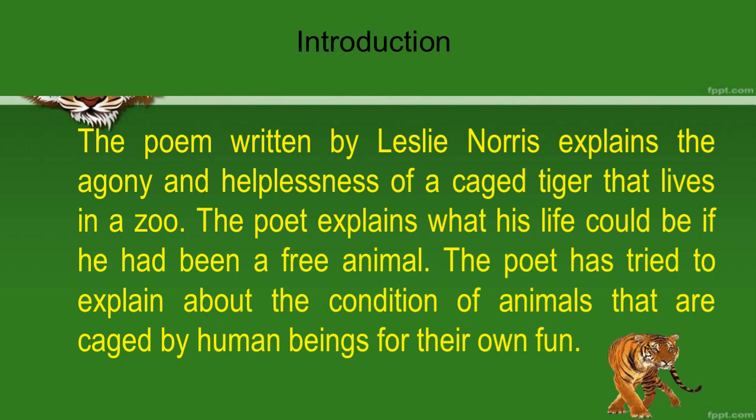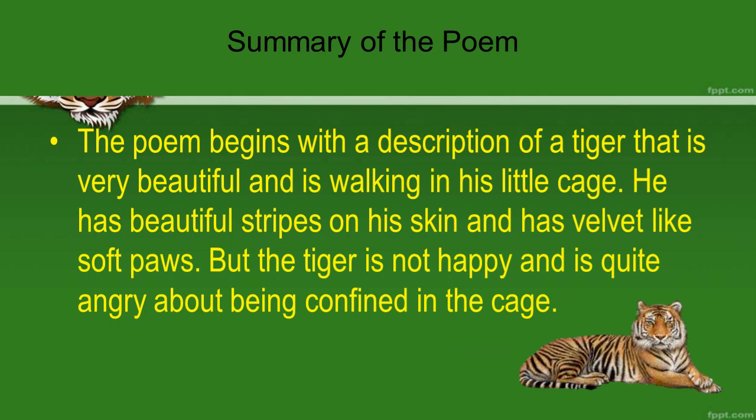The poem written by Leslie Norris explains the agony and helplessness of a caged tiger — how a tiger is so helpless when he is caged in a zoo. The poet explains what his life would be if he had been a free animal. The poet has tried to explain the condition of animals that are caged by human beings for their own fun.